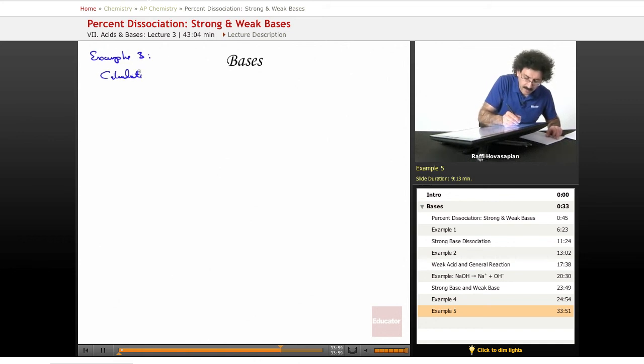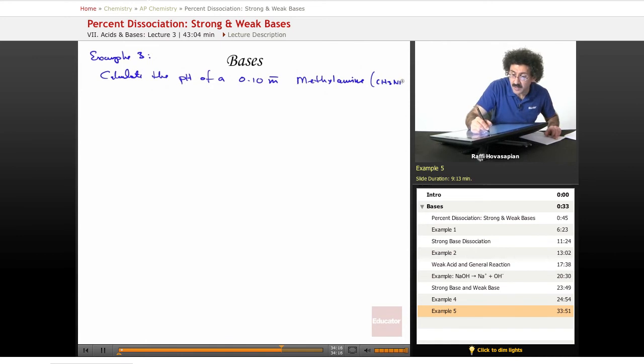Calculate the pH of a 0.10 molar, this time, methyl amine, which is CH3NH2 solution.